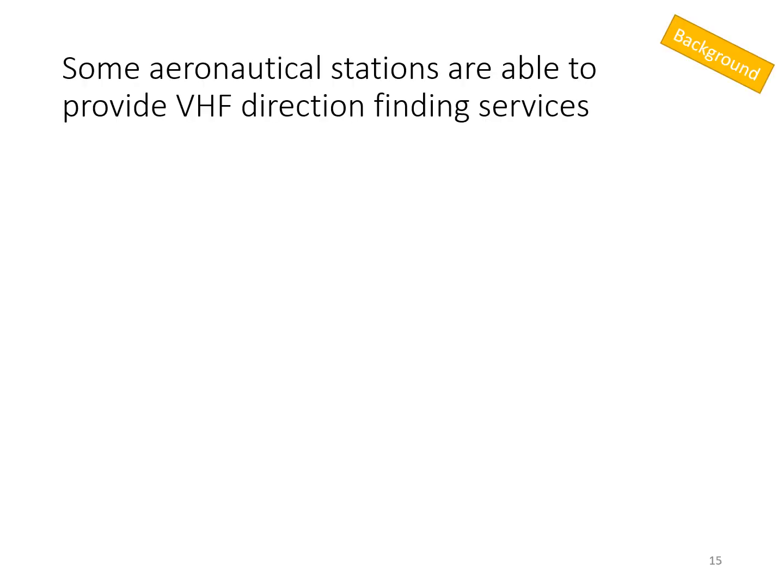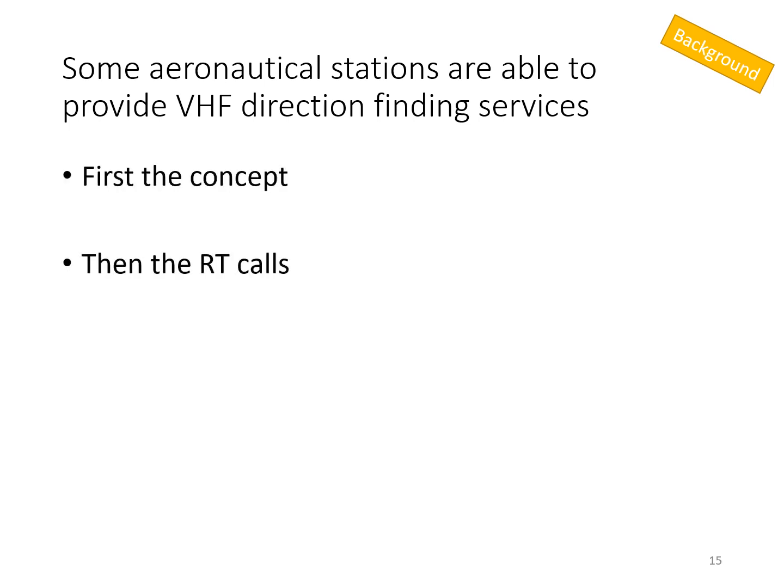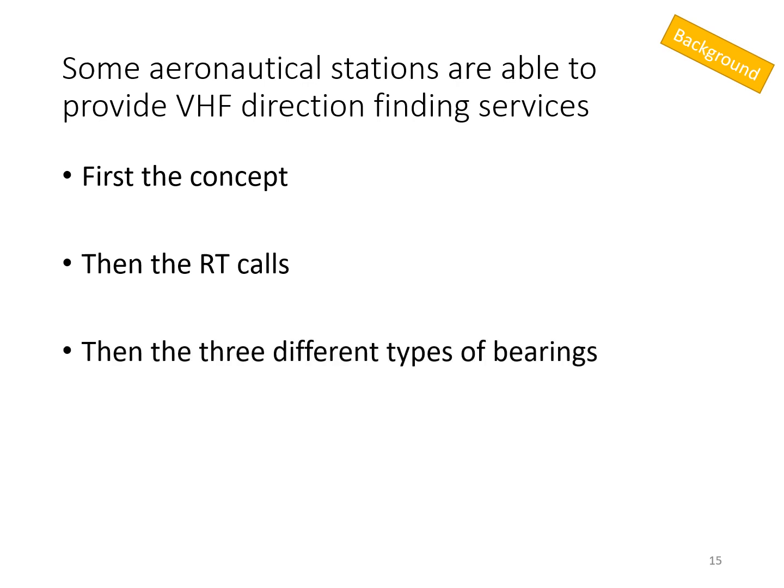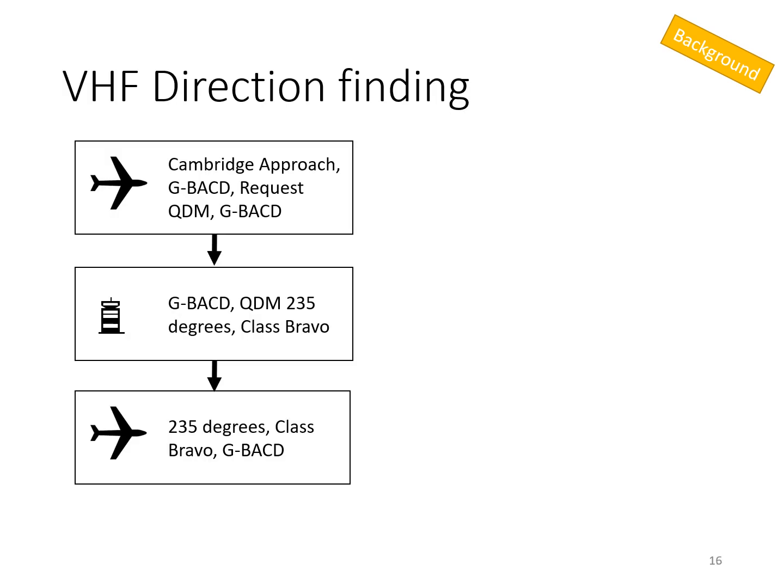Some aeronautical stations are able to provide VHF direction finding services. I'm going to cover first the concept, then the RT calls that we'll use, and then the three different types of bearings. They're not hugely useful to a glider pilot, but you do need to know about them for the FRTOL exam. Here's an example — Cambridge happens to be one station that can provide this service. Cambridge Approach, Golf Bravo Alpha Charlie Delta, request QDM. Golf Bravo Alpha Charlie Delta. The reply would be: Golf Bravo Alpha Charlie Delta, QDM 235 degrees, Class Bravo. You acknowledge with: 235 degrees, Class Bravo, Golf Bravo Alpha Charlie Delta. A display in the control tower indicates the aircraft's direction.